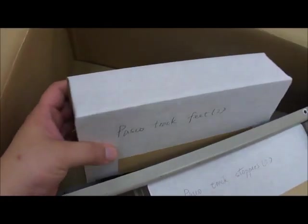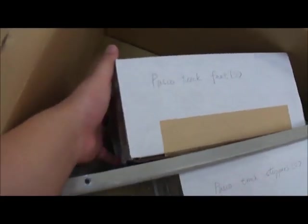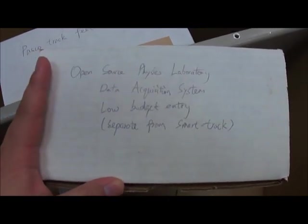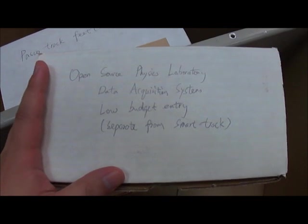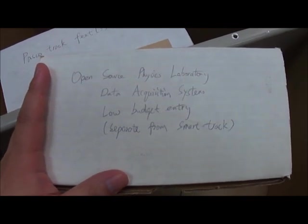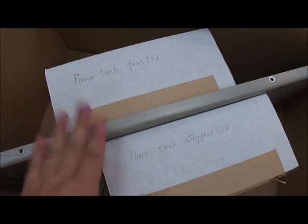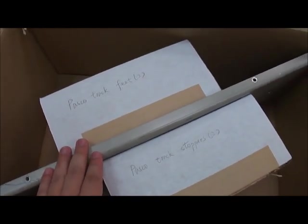There's actually a number of smaller boxes, six of them, on each side of this panel here. And this box here is actually for a separate entry. I applied for two entries. This one, with everything inside this box, is for the low budget entry of the open source physical laboratory data acquisition system. So we're now going to set this one up. Here we have six boxes and this plate and a separate container.